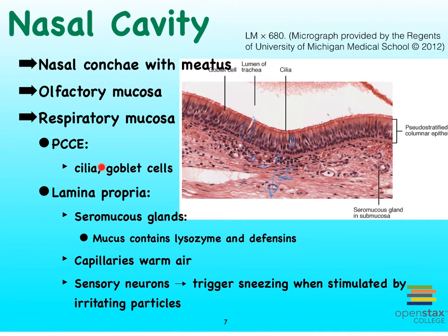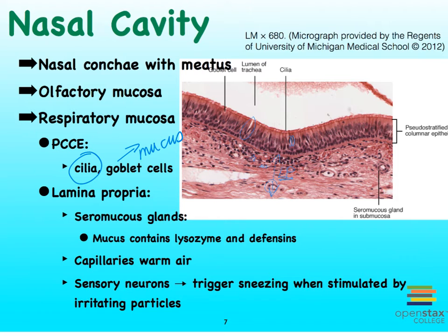The cilia as well as the goblet cells of our pseudostratified ciliated columnar epithelial tissue play a very important protective role. The goblet cells produce mucus, and that mucus is going to help with the trapping of all kinds of particles — pollen or other particles that we inhale — so they get trapped. The cilia then, with their beating movement, attempt to move those particles upward so that we can essentially remove them from the trachea by swallowing them as they reach our oral cavity.